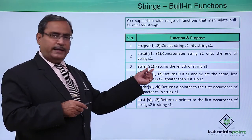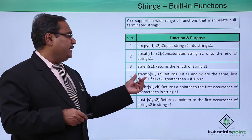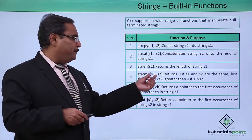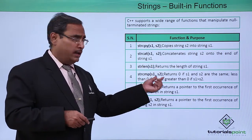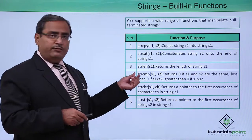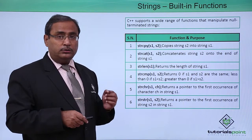strlen s1 takes only one string variable and returns the length of the string. strcmp compares s1 and s2. It returns 0 if s1 and s2 are same and returns non-zero value if s1 and s2 are not equal.